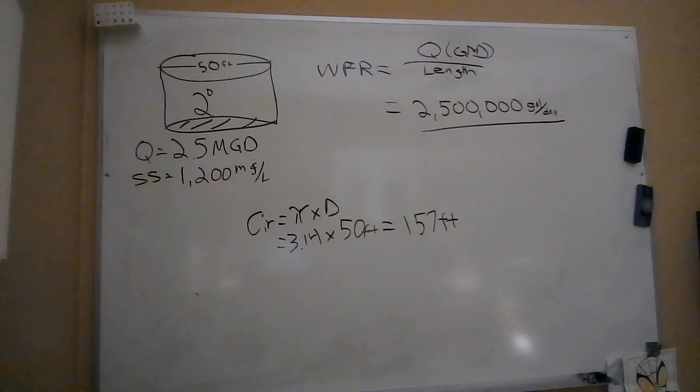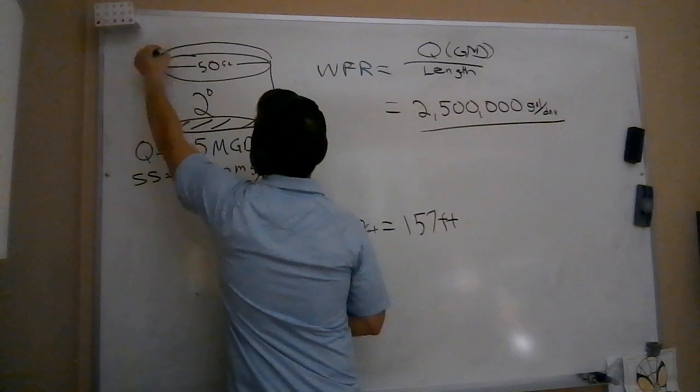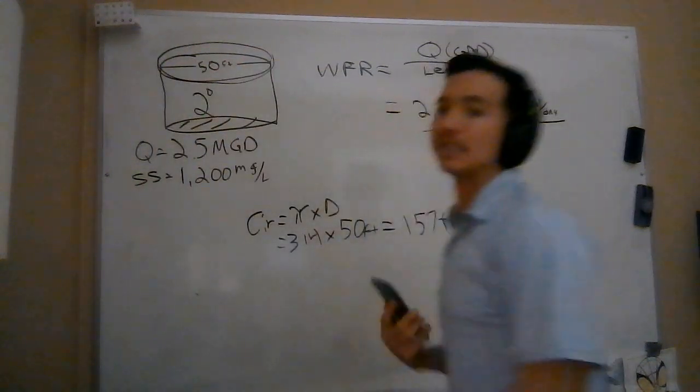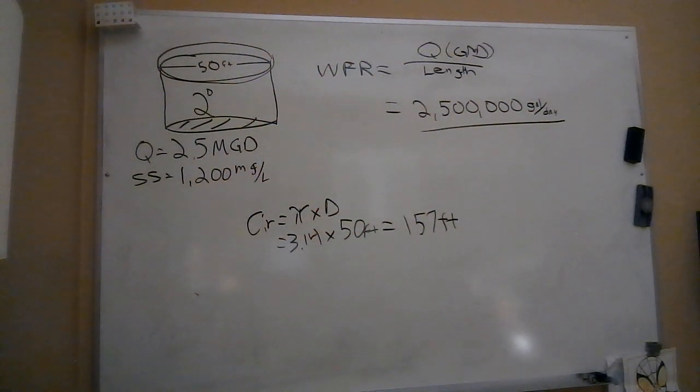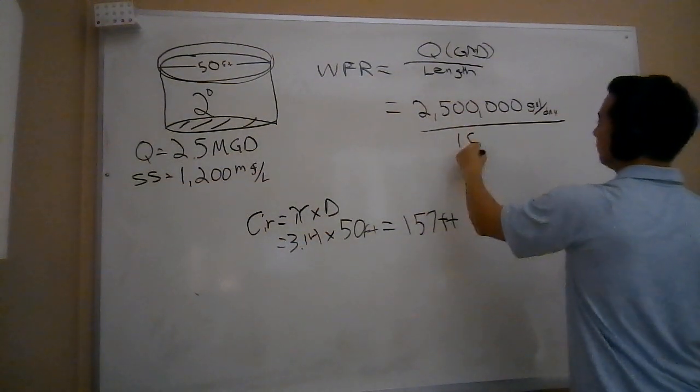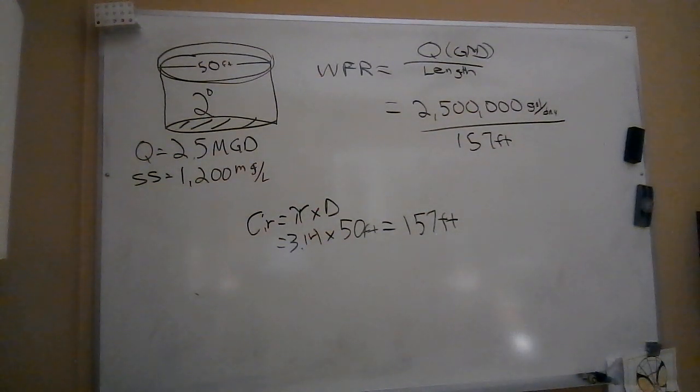Imagine you're on the outside here, walking around the outside in a linear fashion to get the length of that weir. The reason we use a weir is it helps to elevate and stabilize that flow - we want nice uniform flow coming out of our clarifier into that trough where we're capturing that water on its way to tertiary treatment. So the length here is 157 feet. Now I'm just going to divide it out: 2,500,000 divided by my 157 feet of weir length.